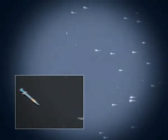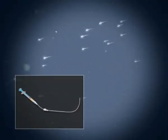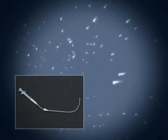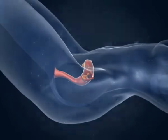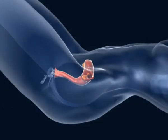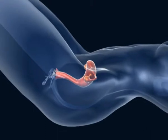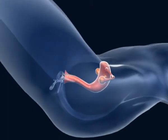The sperm that has been prepared is loaded into a syringe to which a catheter is attached. Then the speculum is introduced into the vagina, allowing the entrance of the neck of the uterus to be made visible.